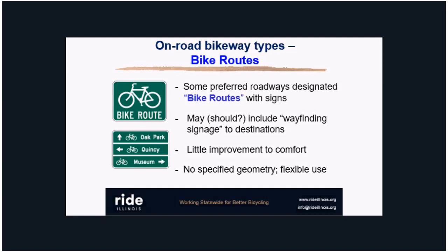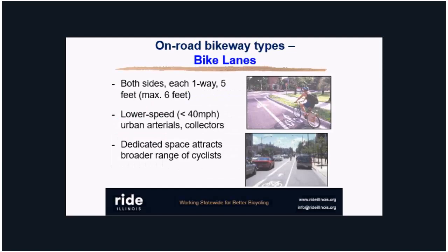The first on-road bikeway type is a simple bike route sign. Years ago it just said 'bike route,' but lately the tendency is to include wayfinding information — destination names and even mileages — and that type of sign is now accepted by national standards. Bike route signs have no real constraints on what type of road you use; they simply indicate this is a preferred route in your network, and that flexibility can help out considerably.